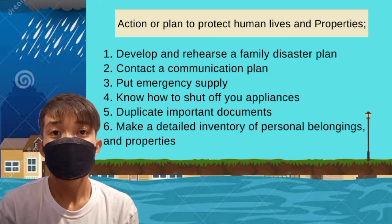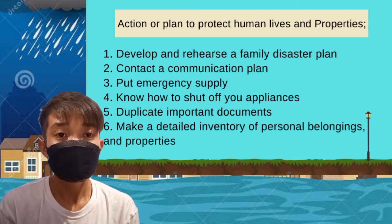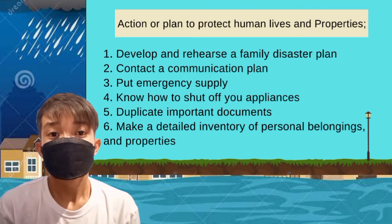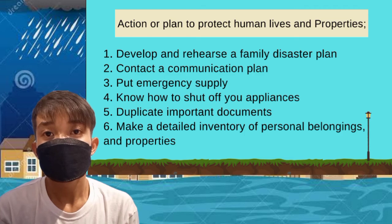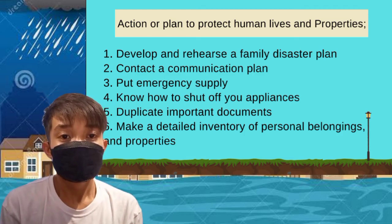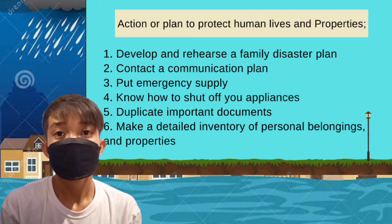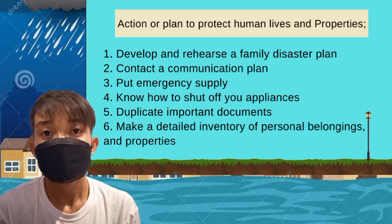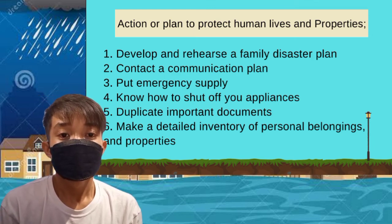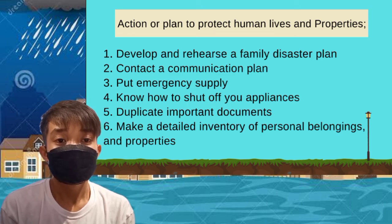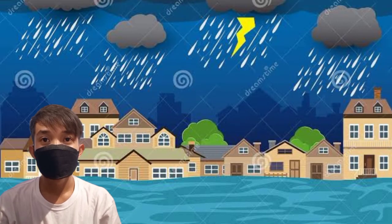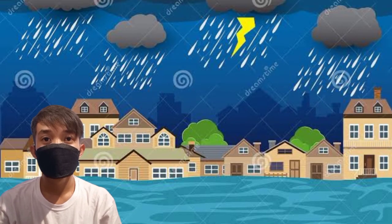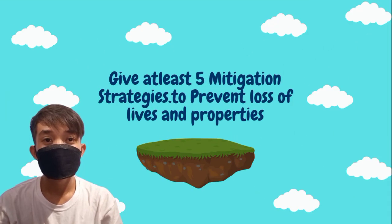Number four, know how to shut off your appliances. Each member of the family must know how to turn off the main switch to avoid fire or electric shock. Number five, duplicate important documents — place them in a waterproof box or in a vault. Number six, make a detailed inventory of personal belongings and properties. Be aware of all things in your house and take note of everything you will be leaving. For those watching this presentation, give at least five mitigation strategies mentioned in our discussion.